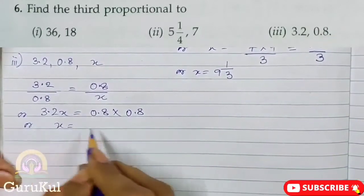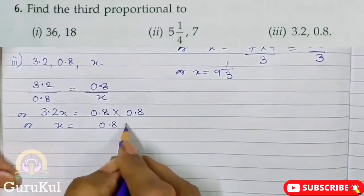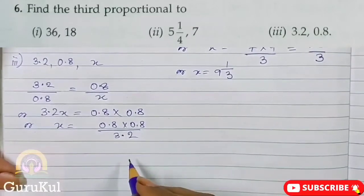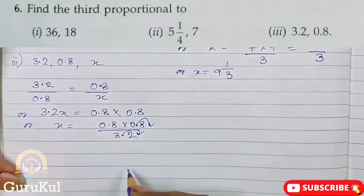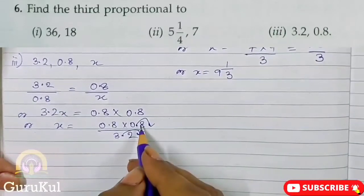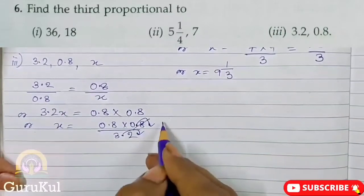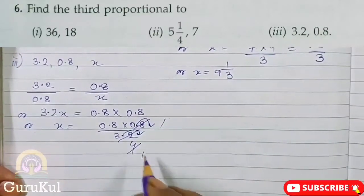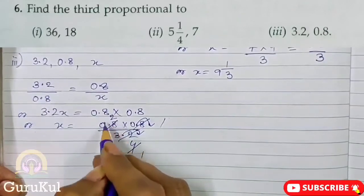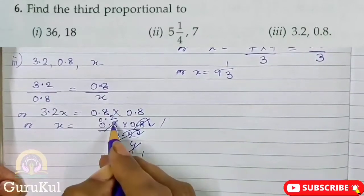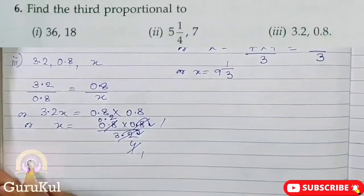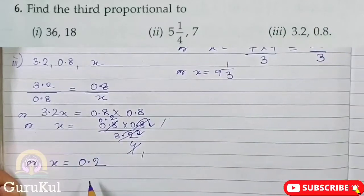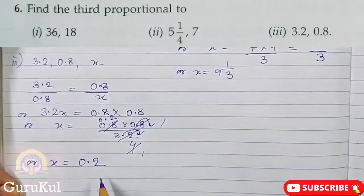Or, X is equal to 0.8 into 0.8 by 3.2. Now here we shift one decimal place. So this will be around figure 8. 8 fours are 32, 4 twos are 8. Remember, this is 0.2. We must take care of the decimal. And the value of X is 0.2. So 0.2 is the third proportion.